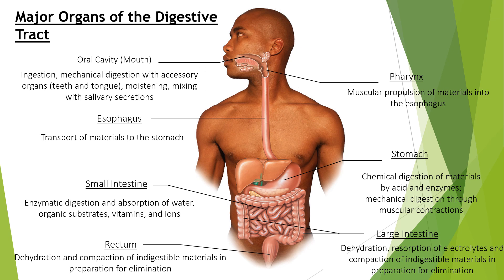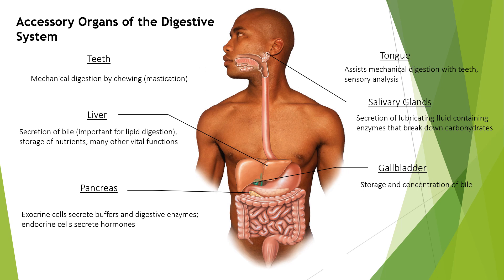The large intestine is involved in dehydration, reabsorption of electrolytes, and compaction of indigestible materials in preparation for elimination. The teeth perform mechanical digestion by chewing in a process known as mastication. The tongue assists mechanical digestion with teeth and sensory analysis. The liver secretes bile, which is important for lipid digestion, and performs storage of nutrients and many other vital functions. Salivary glands secrete lubricating fluid containing enzymes that break down carbohydrates. The pancreas has exocrine cells which secrete buffers and digestive enzymes, and endocrine cells which secrete hormones. The gallbladder is responsible for storage and concentration of bile.